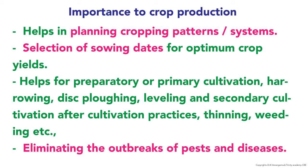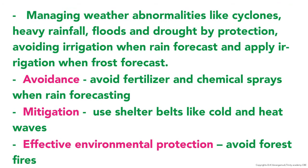Agricultural meteorology also helps in eliminating outbreaks of pests and diseases. It helps manage weather abnormalities like cyclones, heavy rainfall, floods, and drought through protection measures — for example, avoiding irrigation when rain is forecast and applying irrigation when frost is forecast. Avoidance means not applying fertilizers and chemical sprays when rain is forecast. Mitigation involves using shelters during cold and heat waves, and effective environmental protection to avoid forest fires.